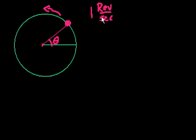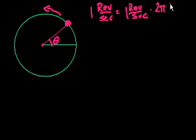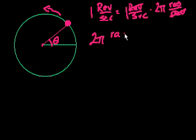If this object is traveling at one revolution per second, how many radians per second is it traveling? Well, how many radians are there in a revolution? There's 2π radians in a revolution, right? One go around in a circle is 2π radians. So this equals 1 rev per second times 2π radians per rev. The revolutions cancel out, and you have 1 times 2π, so you have 2π radians per second.